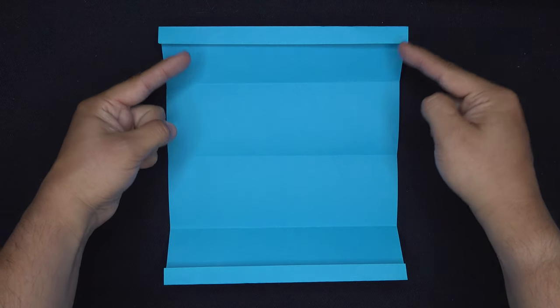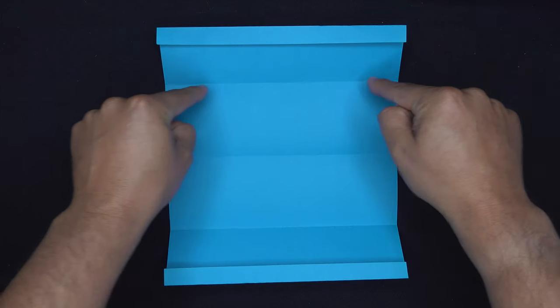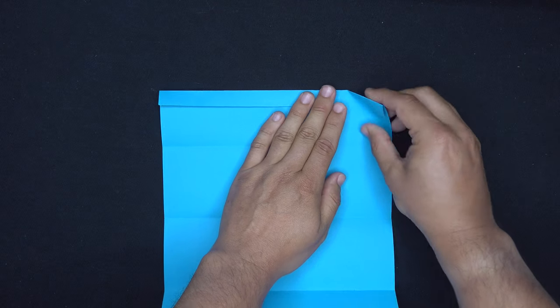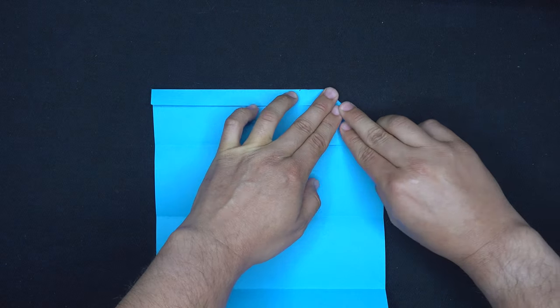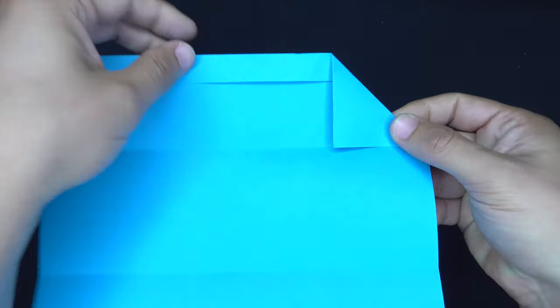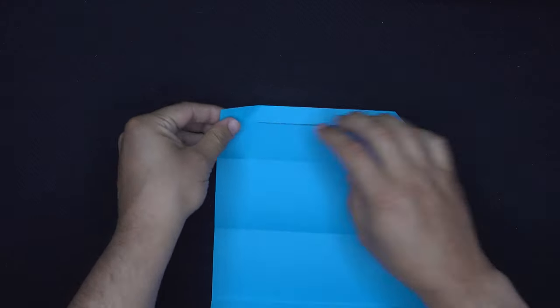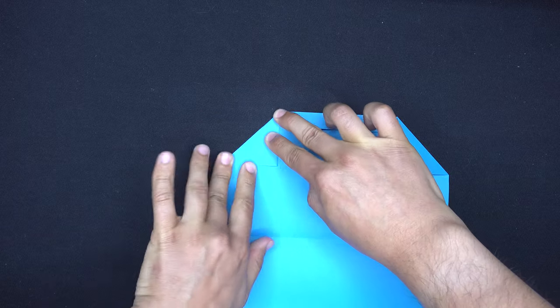Now we can take the two top corners and fold them inwards to this first line right here. Airplane fold it in like this and make a nice sharp crease on the top. Do the same on the top left folding the top corner inwards and creasing.